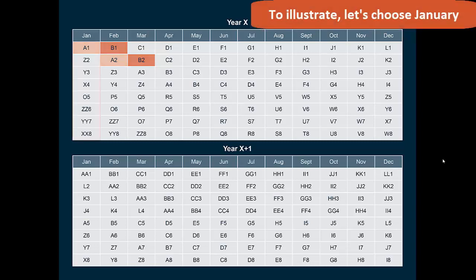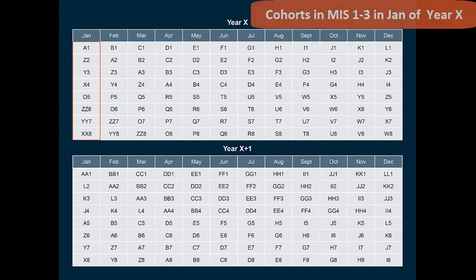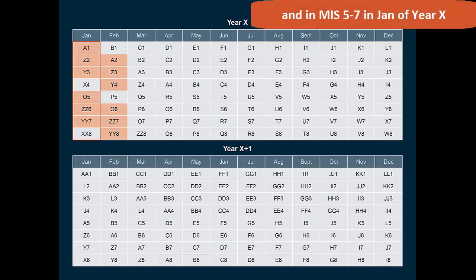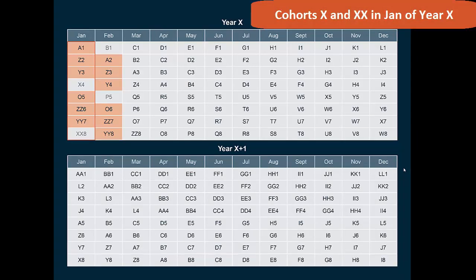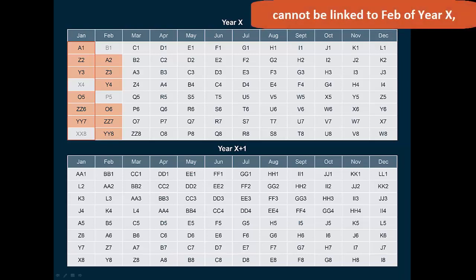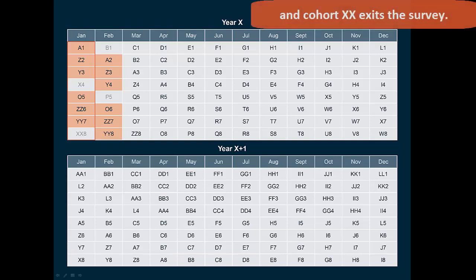To illustrate, let's choose January of year X as our focal month. Cohorts in month-in-sample 1 through 3 and 5 through 7 in January of year X can be linked to February of year X. However, Cohort 4 begins the 8-month break, and Cohort 8 exits the survey for good.